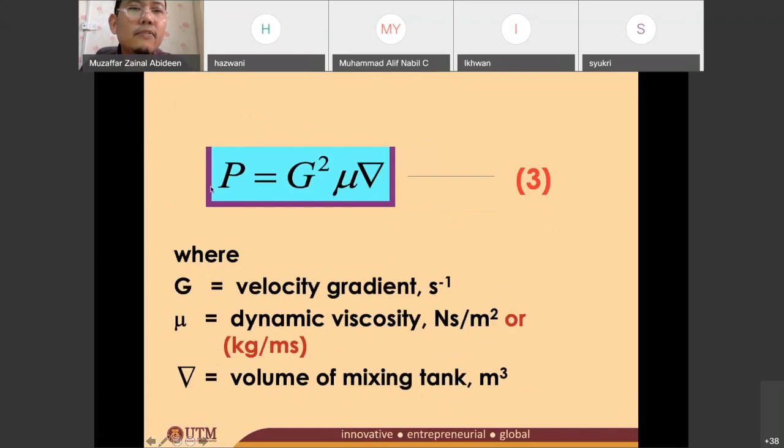And then another formula for P is equal to G squared mu V. G squared is velocity gradient, you know it just now. And mu is actually the dynamic viscosity, it is the property of the water itself. The dynamic viscosity and V, this kind of V or this triangle, I call it this is a V, is the volume of the tank. The volume of the flocculation tank. The isipadu or volume of the tank.